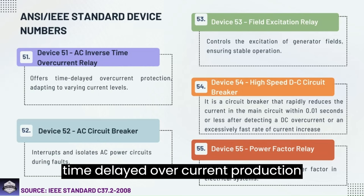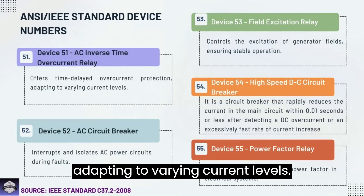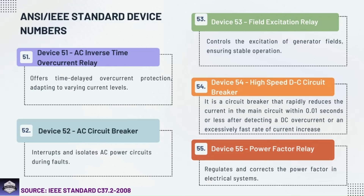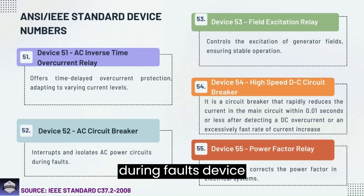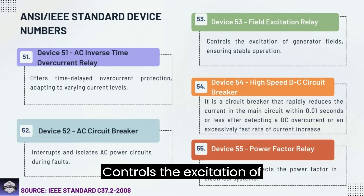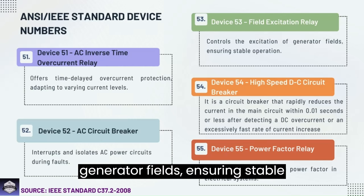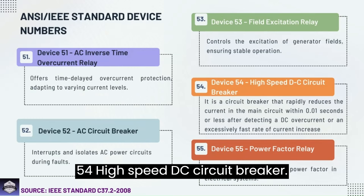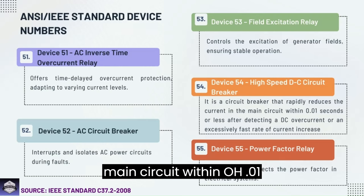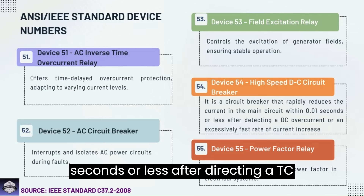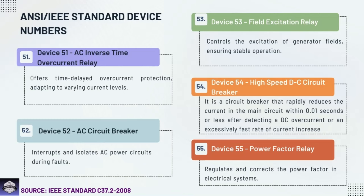Device 52: AC circuit breaker — interrupts and isolates AC power circuits during faults. Device 53: Field excitation relay — controls the excitation of generator fields, ensuring stable operation. Device 54: High speed DC circuit breaker — a circuit breaker that rapidly reduces the current in the main circuit within 0.01 seconds or less after detecting a DC overcurrent or excessively fast rate of current increase.